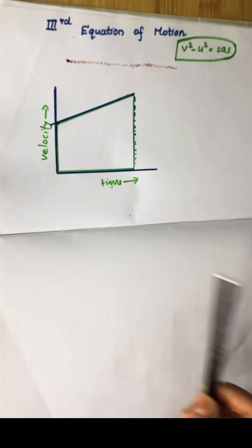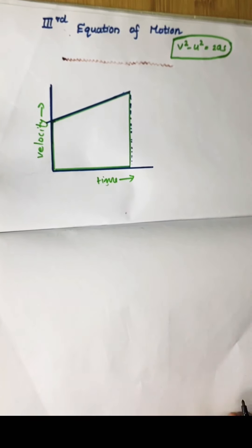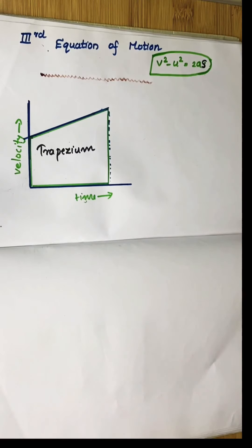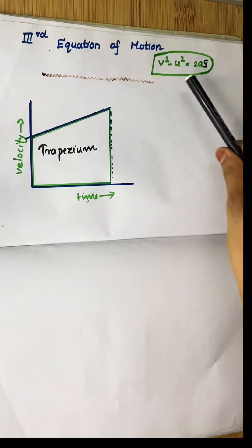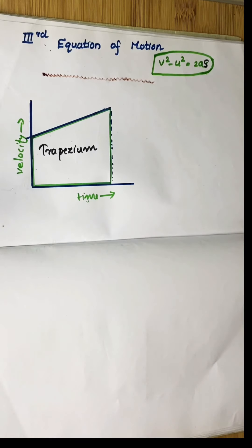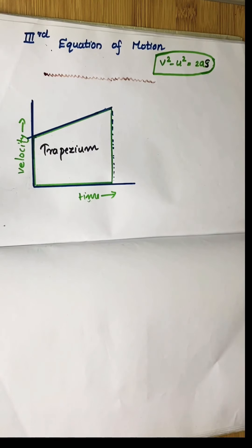Hi, my dear students. We can easily find out the third equation of motion from a velocity-time graph of uniform acceleration. The third equation of motion is v squared minus u squared equals 2as. Here, v is final velocity, u is initial velocity, a is acceleration, and s is distance.